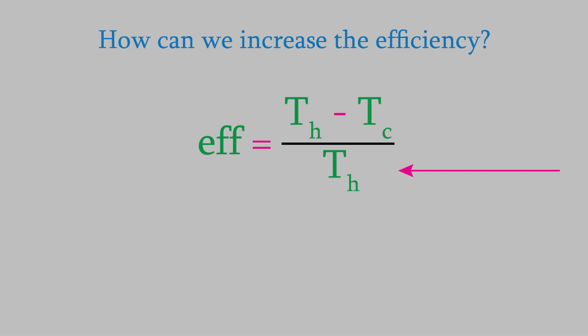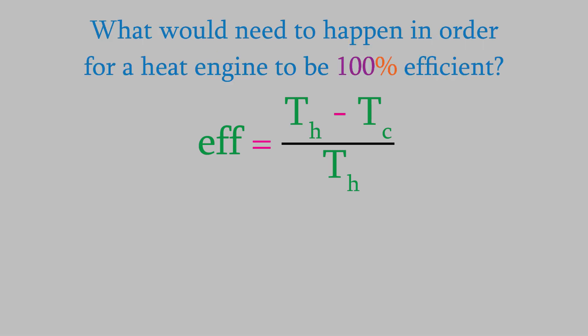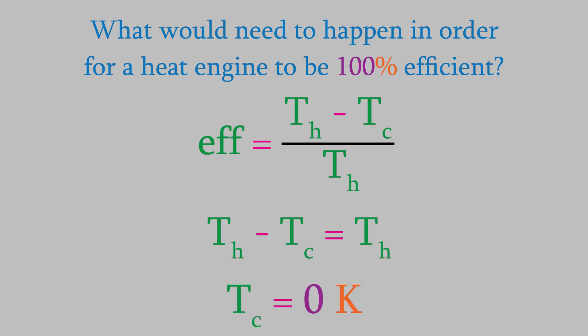But what if we wanted to create an engine that's 100% efficient? To be 100% efficient, the fraction would have to equal 1, which means the numerator and the denominator would need to be the same. That means the cold temperature would need to be 0 Kelvin. So the only way to get a perfectly efficient engine would be to hold the cold reservoir at absolute zero — and that's not possible. This tells us that no real engine can ever be completely efficient. Some of the energy of the engine will always be wasted, which usually means it will be converted into heat.